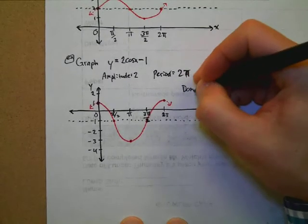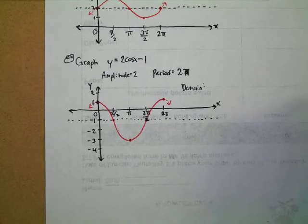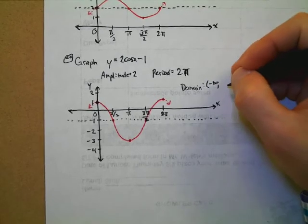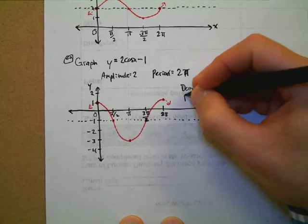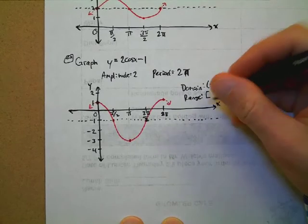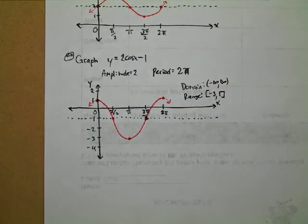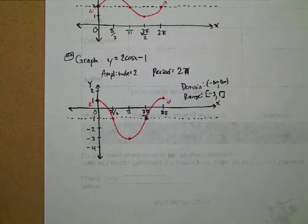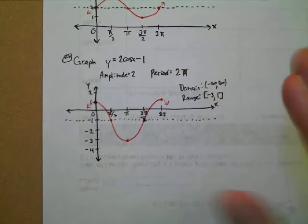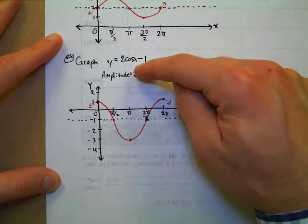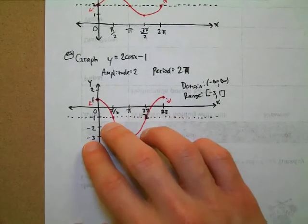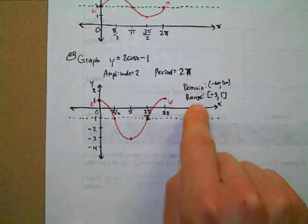The domain of this graph goes from negative infinity to positive infinity. The range: the lowest y value is negative three and the highest is one. Domain and range become more interesting when you start doing vertical shifts. You should know how to find amplitude and period — I have you write them out because it helps guide the graphing.